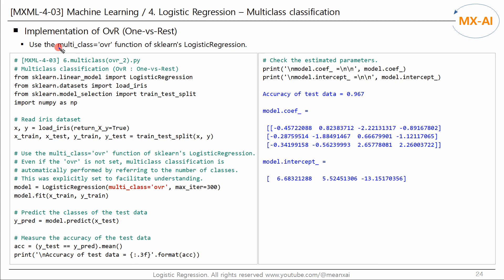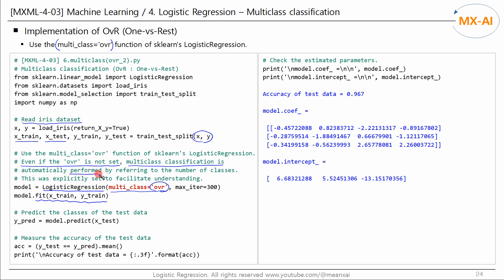Now let's use the multi-class argument of the logistic regression class set to OVR. Read the IRIS data set and split the data into training and test data — one-hot encoding is not required here. We create a logistic regression model and set the multi-class argument to OVR, then fit this model to the training data. Even without setting OVR explicitly, multi-class classification is automatically performed by referring to the number of classes Y: binary if classes are 0 and 1, or multi-class if greater than 2. OVR is explicitly specified here for clarity.